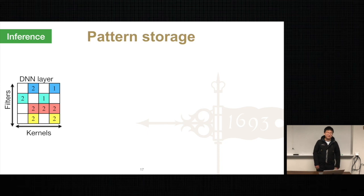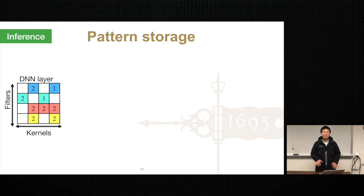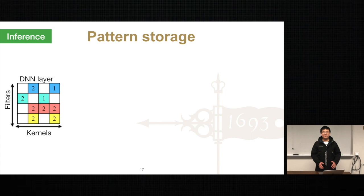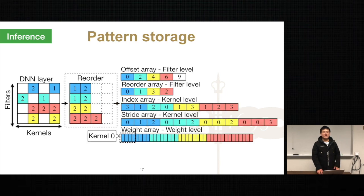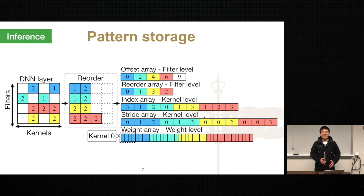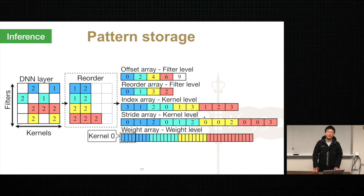Now, regarding pattern storage: we store DNN weights in a novel compact format called FKW. Compared with existing compact data formats like CSR, FKW is a higher-level format resulting in less overhead. We use four extra data structures to store the sparse information — two at the filter level and two at the kernel level. The key advantage of FKW is that it leverages pattern information to organize kernel storage and support later branchless DNN execution, which other compact data formats cannot support.